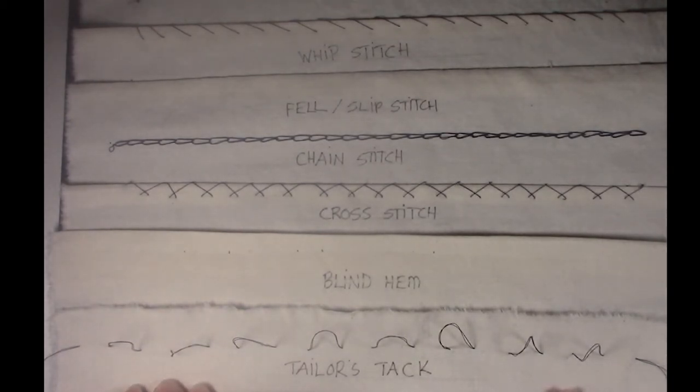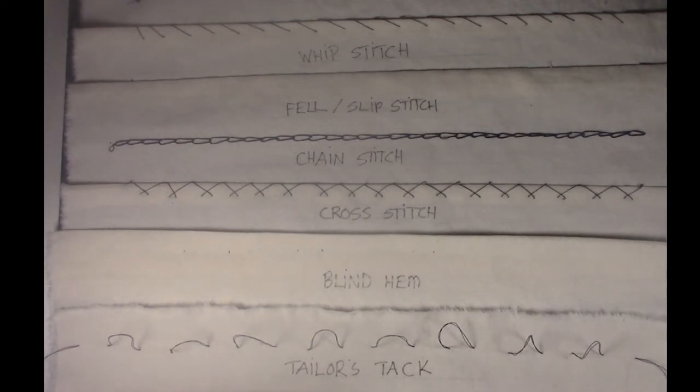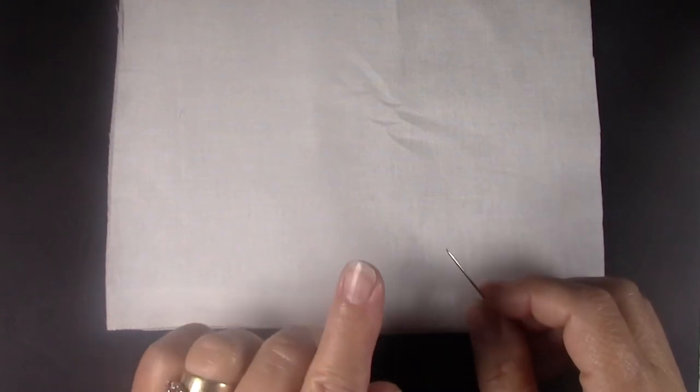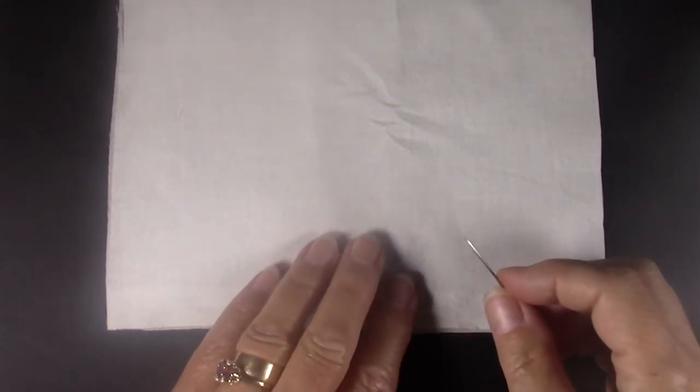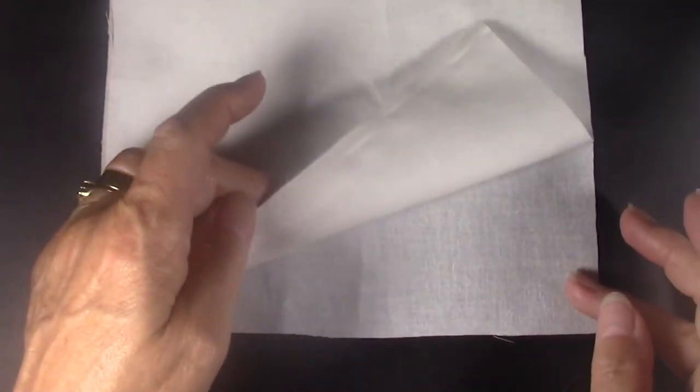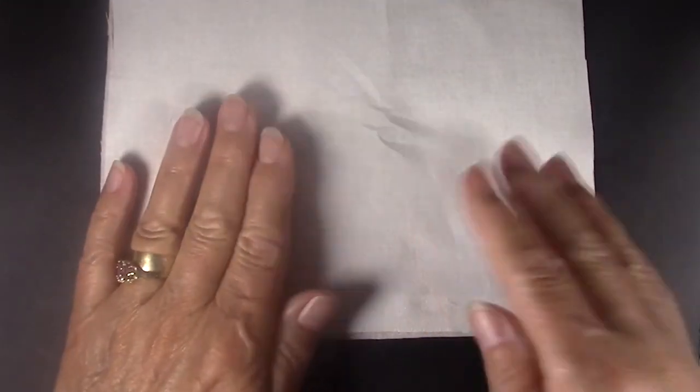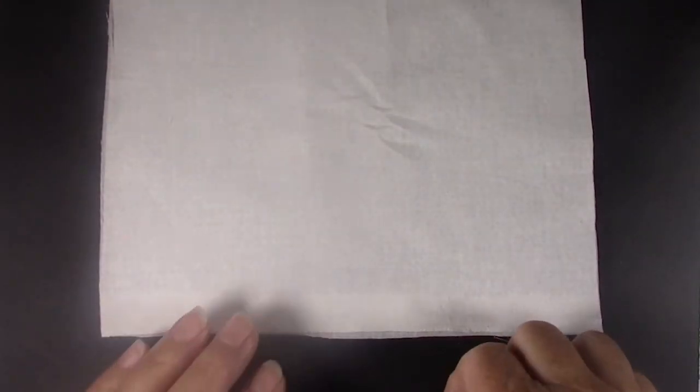Okay, so let's go ahead and I'll show you how to do tailor tacks. Tailor tacks are really nothing more than a long basting stitch that you're going to leave some give in, so that when you separate your two layers you'll have threads on both sides. And I'll show you in my example in just a minute. So I've put just two pieces of fabric together because I want my tailor tacks for my right and my left side of the garment.